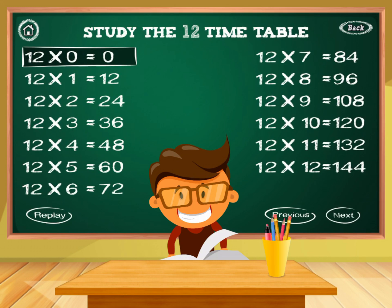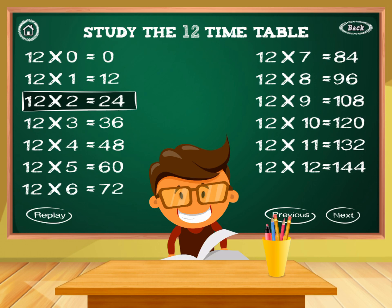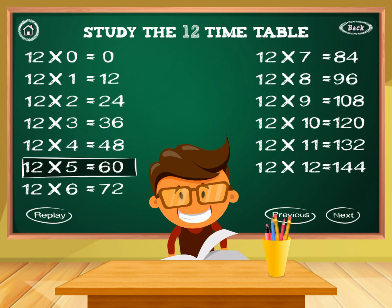12 times 1 equals 12. 12 times 2 equals 24. 12 times 3 equals 36. 12 times 4 equals 48. 12 times 5 equals 60.